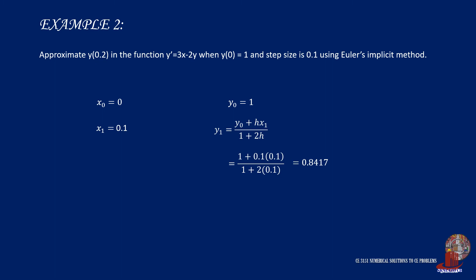x2 is x1 of 0.1 plus 0.1 from h, giving us x2 = 0.2. y2 will be taken as y1 of 0.8417 plus 3h of 0.3 times x2 of 0.2. These are divided by 1 + 2h, which is 1.2, so we compute it as 0.7181. And this is the value of y when x = 0.2.